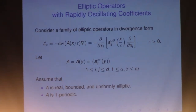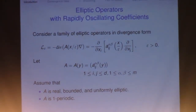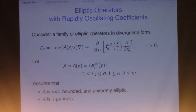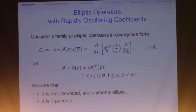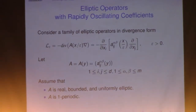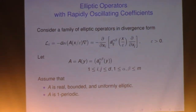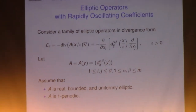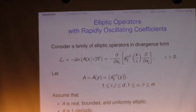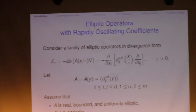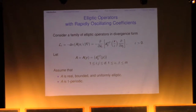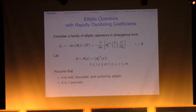There are basic assumptions I want to make. First of all, we're going to deal with real bounded measurable and uniformly elliptic operators. So A is real bounded measurable and uniformly elliptic. For the most part, we do not need any regularity today — bounded measurable will suffice. We also assume that A is one-periodic, that is, the matrix is periodic with respect to the integer lattice.